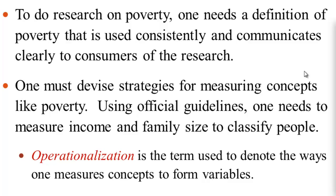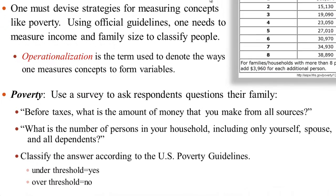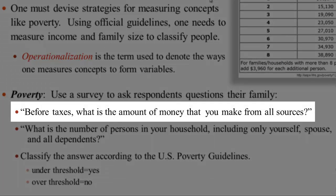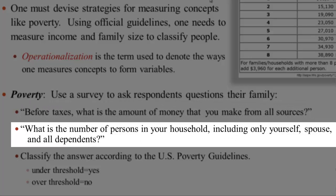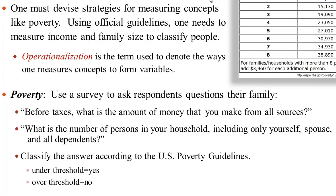Operationalization is the term we use when we move from concepts to measurement. For example, we might use a survey to ask people: before taxes, what is the amount of money that you make from all sources — that's our income-based measure. We could also ask: what is the number of persons in your household, including only yourself, spouse, and all dependents. Then we would use the guidelines defined by the U.S. government and classify people's answers accordingly. If they're under the threshold, then they are in poverty; if they're over it, they are not.